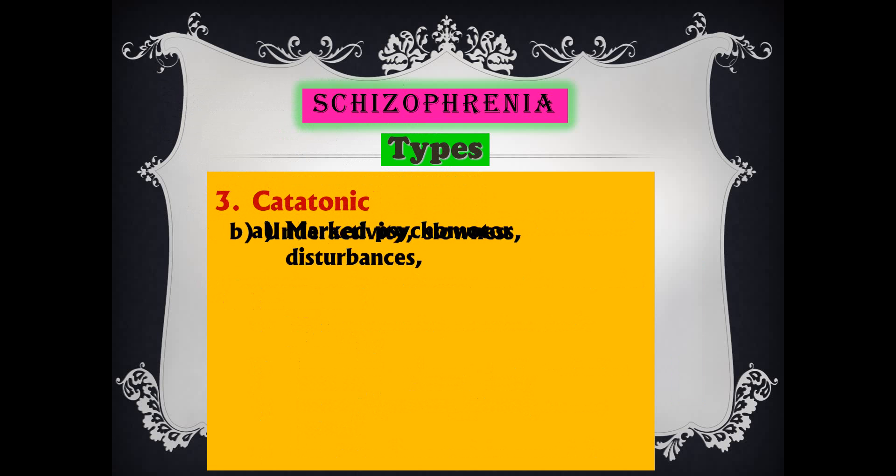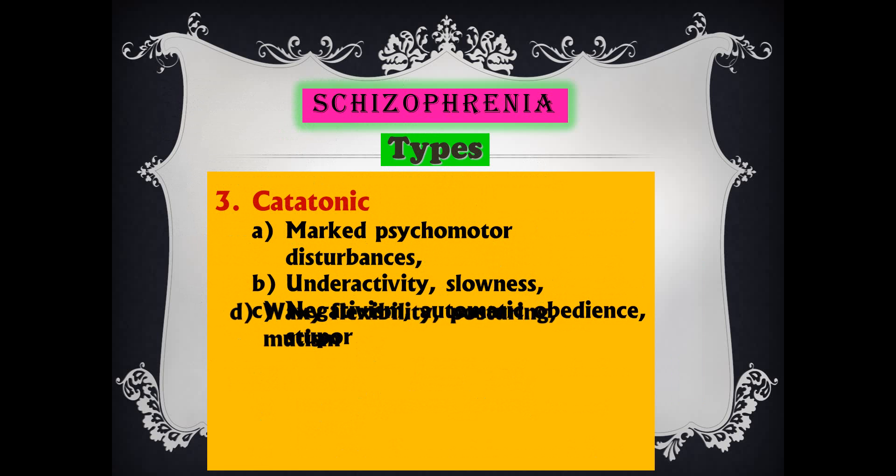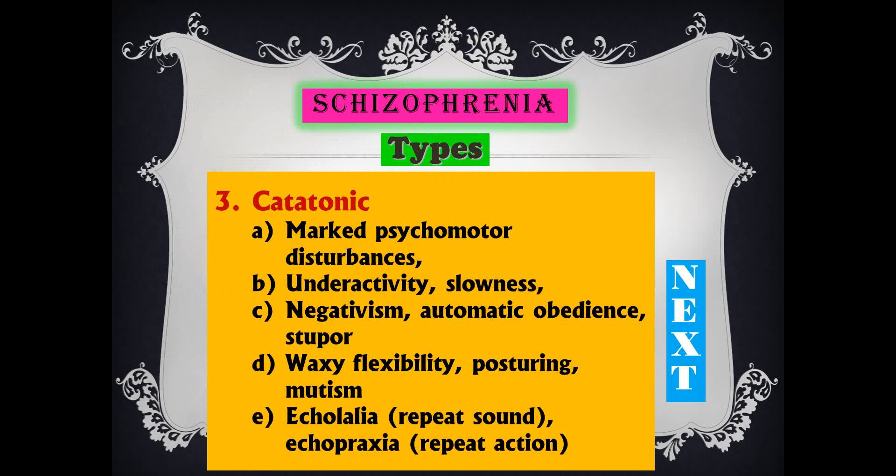Catatonic type shows marked psychomotor disturbance: under-activity, slowness, negativism, automatic obedience, stupor, waxy flexibility (flexibilitas cerea), posturing, and mutism — standing in a room for hours together. Then echolalia — repeating sounds — and echopraxia — if the doctor moves his hand, the patient also moves his hand, mimicking like a child.